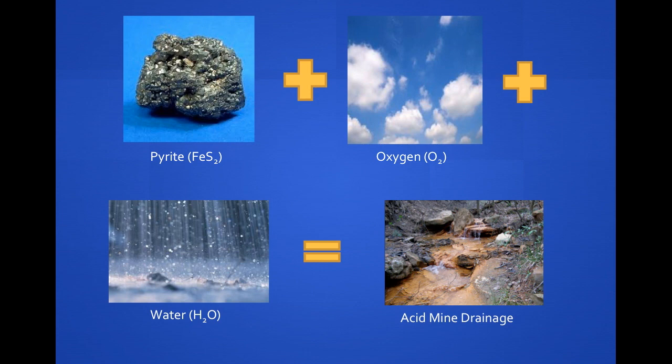As the acidic mine water mixes with the neutral stream water, metals precipitate from solution. Although the pH of the mine water increases after mixing, it is still very acidic.